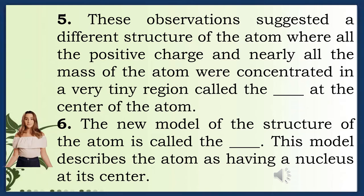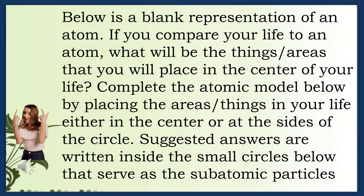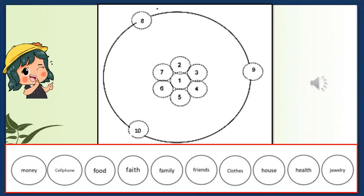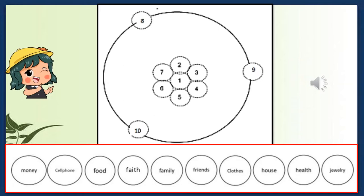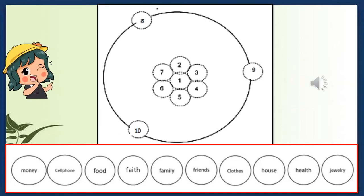This model describes the atom as having a nucleus at its center. If you compare your life to an atom, what will be the things or areas you place at the center of your life? Complete the atomic model by placing areas or things in your life either in the center or at the sides of the circle. Suggested answers: 1-Faith, 2-Family, 3-Health, 4-Friends, 5-Foods, 6-House, 7-Clothes, 8-Money, 9-Cell Phone. Note: numbers 2–5 and 8–10 can be interchanged.